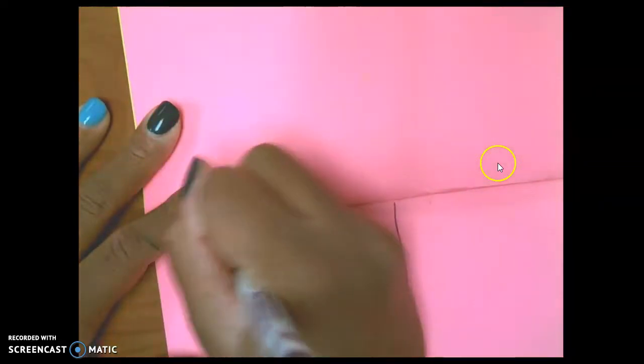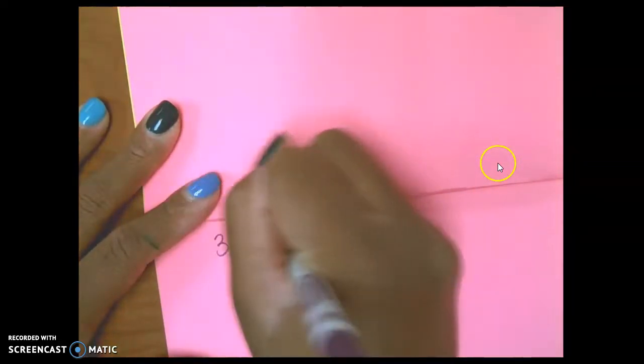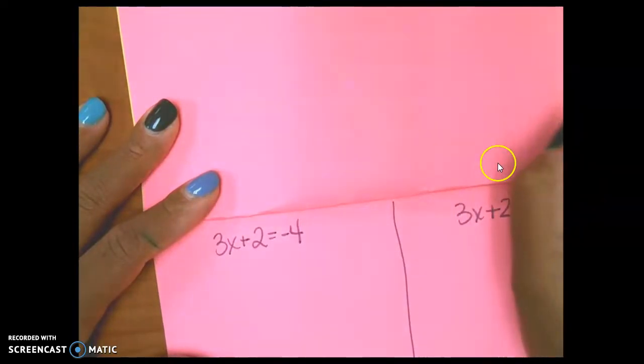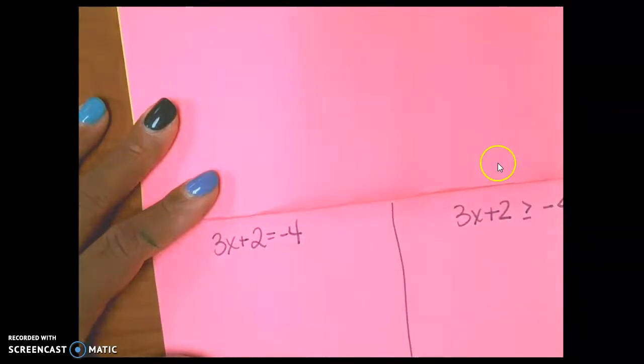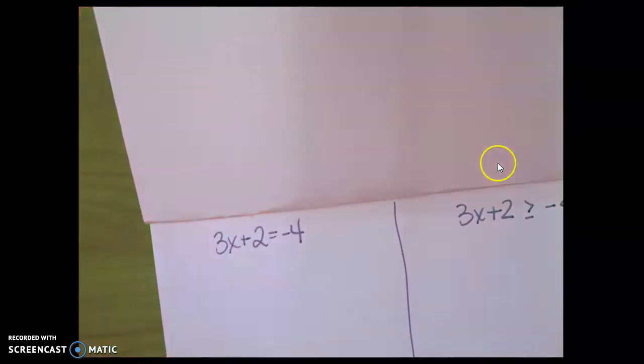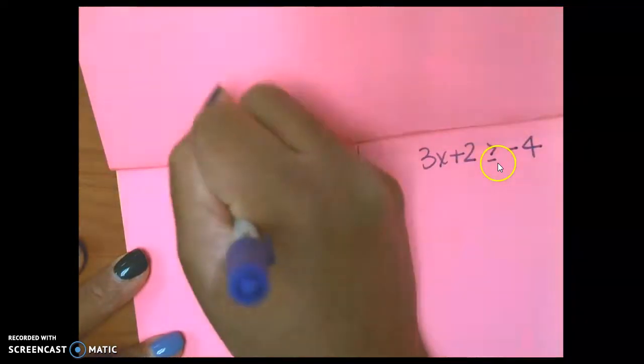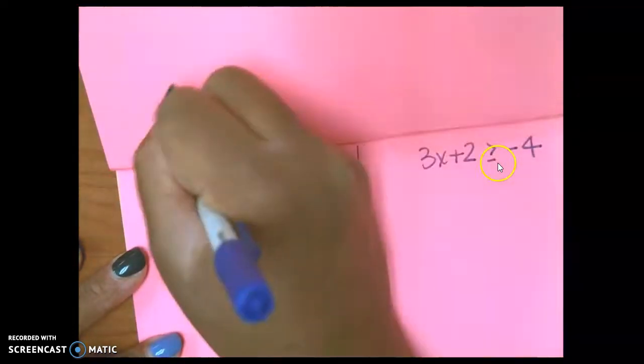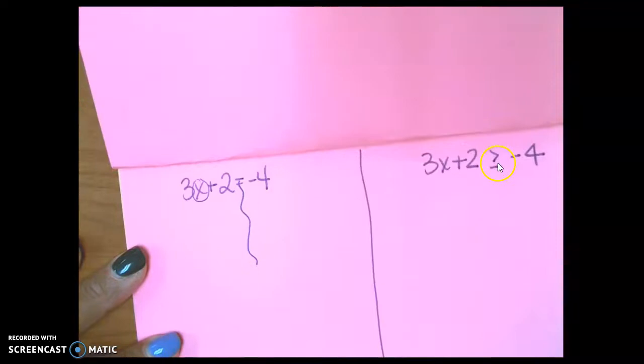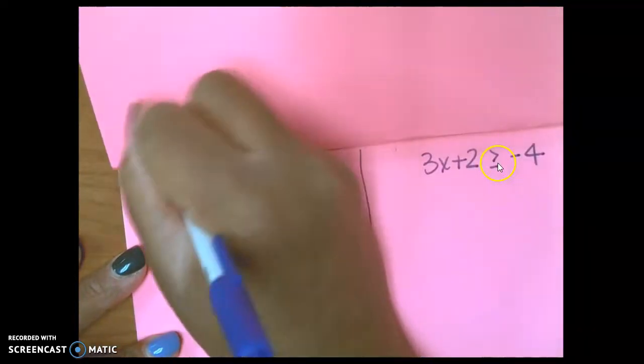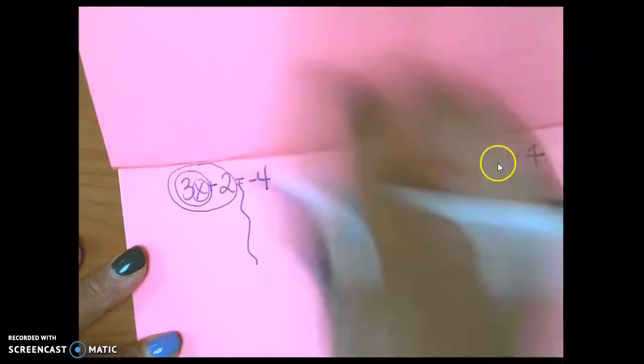The next one. 3x plus 2 equals negative 4. 3x plus 2 is greater than or equal to negative 4. So, all right. Draw your river. Circle your variable according to your notes. Circle your variable and its friend. And then circle the variable, its friend, and the constant.